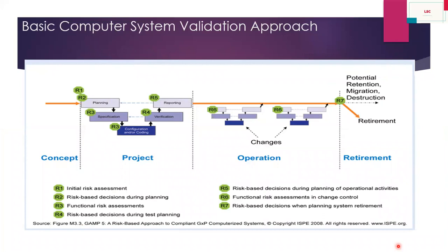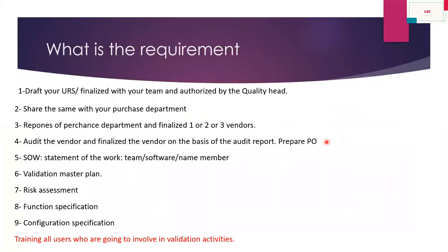This is a brief overview of the GAMP 5 categories. Now, where the risk should be assessed in GAMP 5 is defined in this picture: at the time of concept, at the time of project, at the time of operation, and at the time of retirement. At these time points we check the risk-based approach.